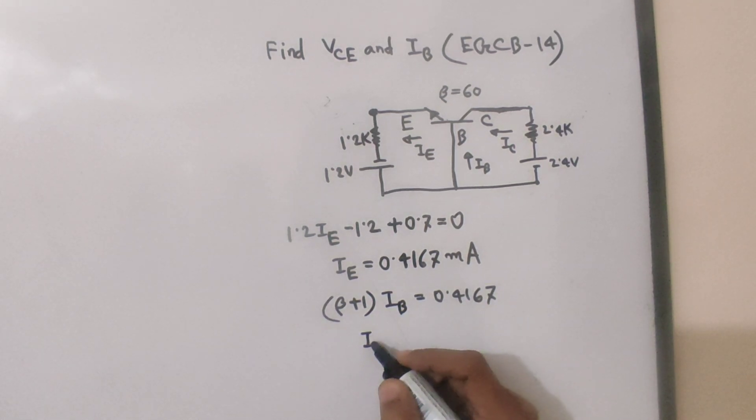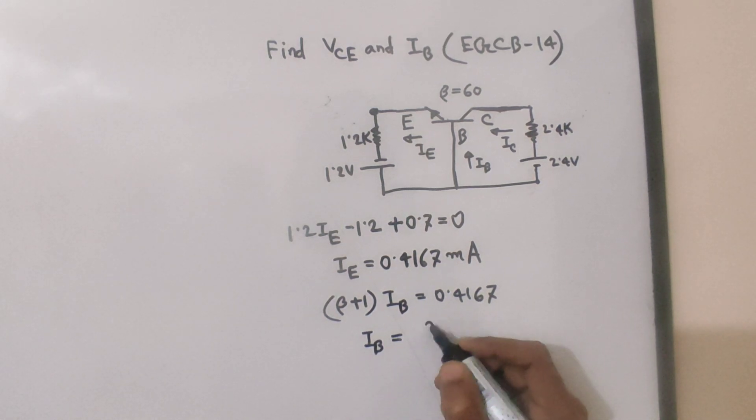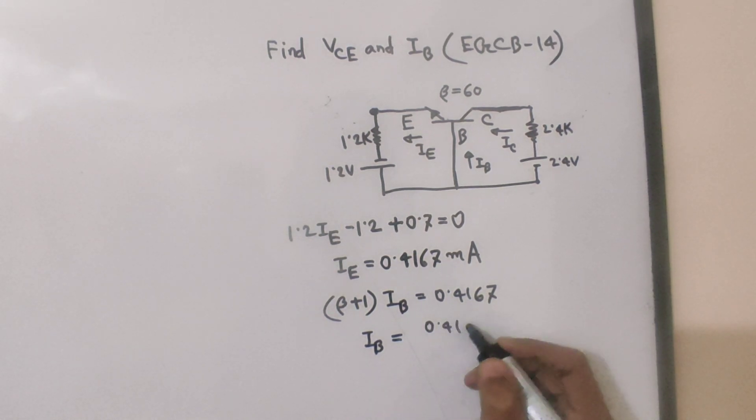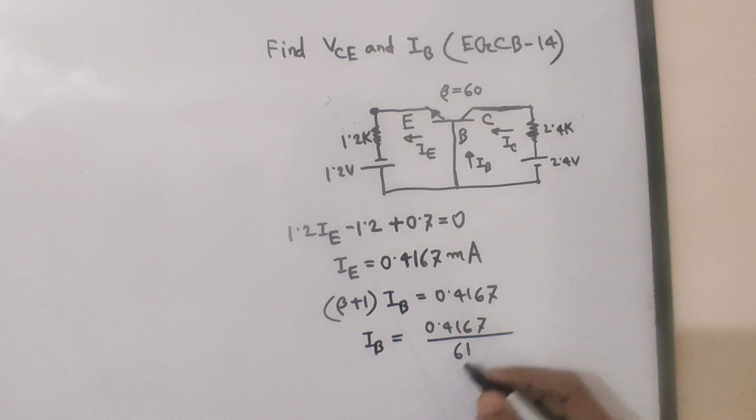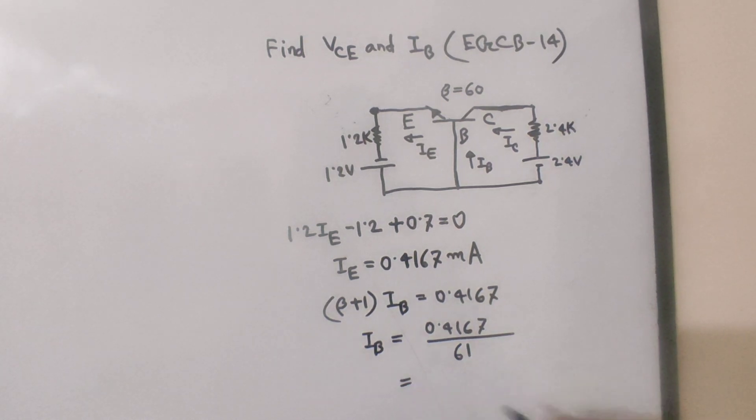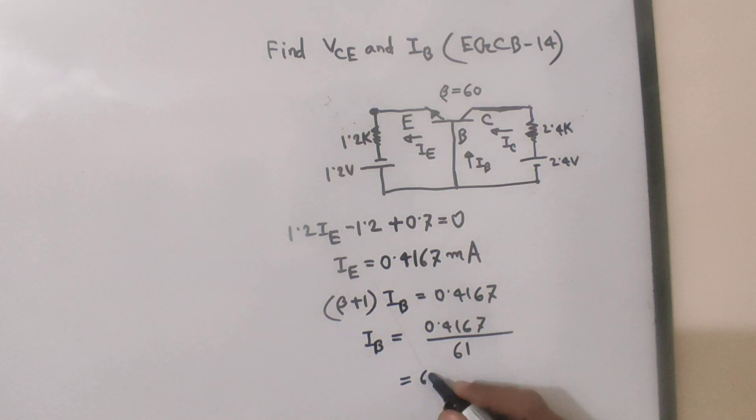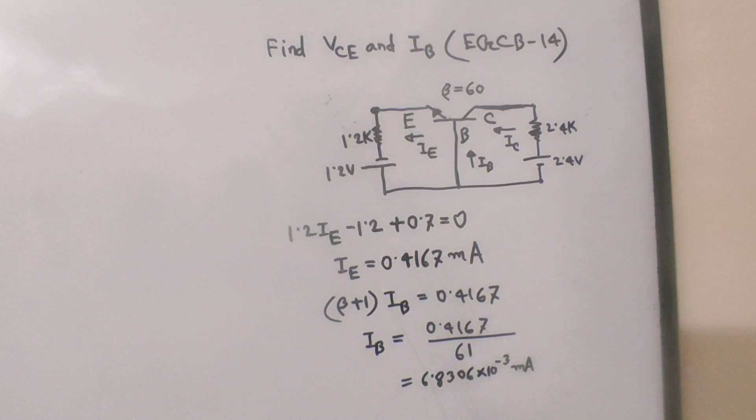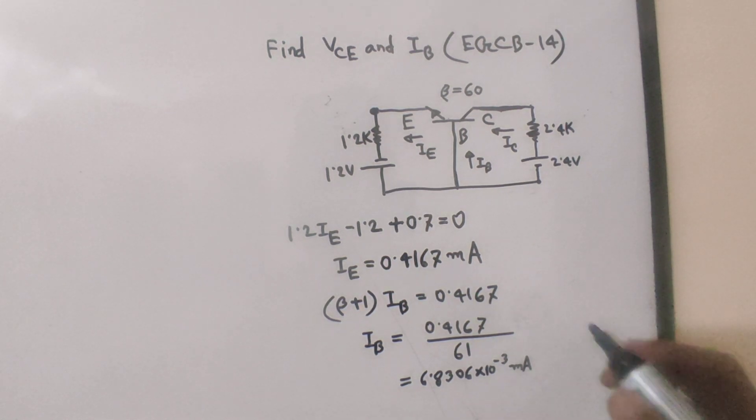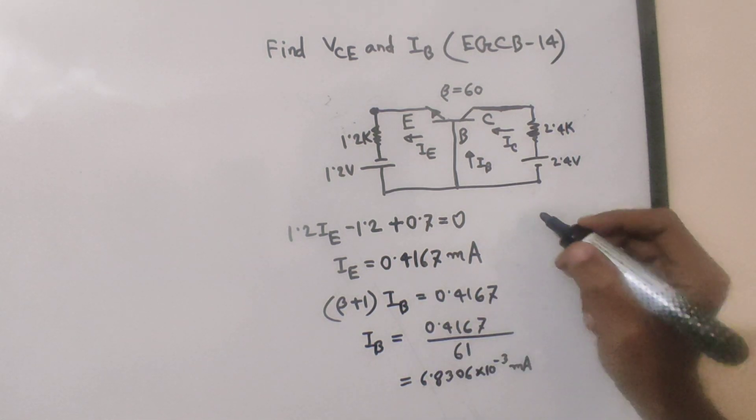So IV is equal to 0.4167 divided by beta plus one. Calculating this value gives us 6.8306 into 10 inverse 3 milliampere, or microampere. That's the solution for IV. Now we need to find IC.